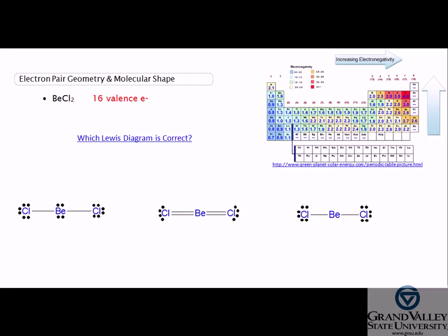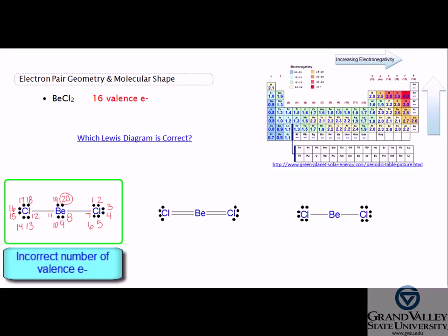Let's take a look at the first option. The number of valence electrons for BeCl₂ is 16. After counting the electrons, there appears to be too many in this drawing. Therefore, this diagram is incorrect.